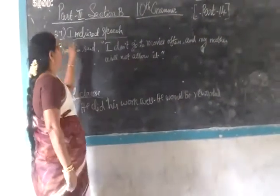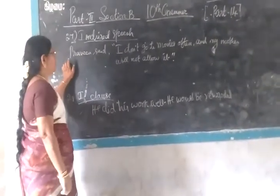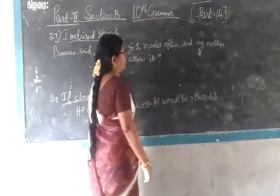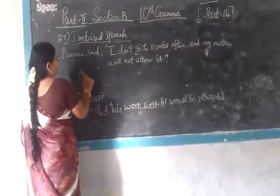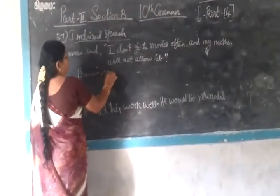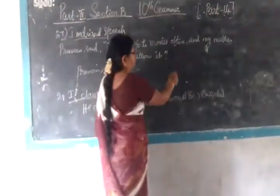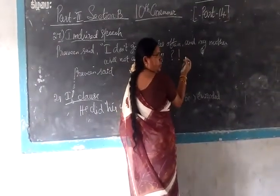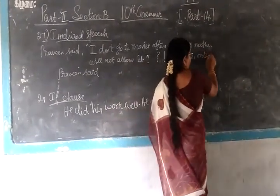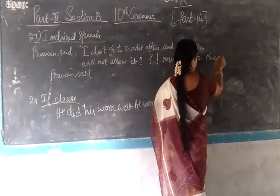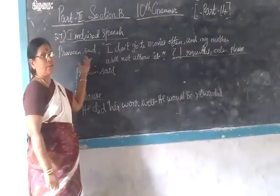Question 27 — Direct to Indirect Speech. The given one is direct speech and we are going to change it to indirect speech. Rameen said: 'I don't go to movie often and my mother will not allow.' First, you see whether it is a statement or a question. Is there any question mark or exclamation mark? Nothing at all. Is there any request or order or 'please'? If you don't find any of those, definitely the given one is a statement.